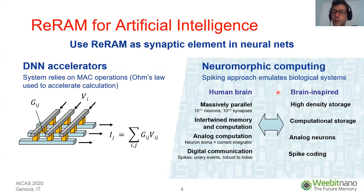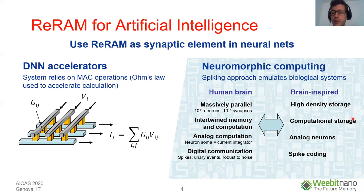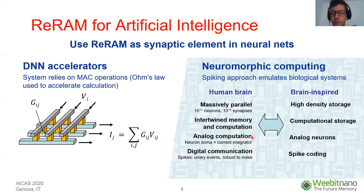Of course, it's not only the spiking approach. Developing an efficient system requires emulating more closely what happens in the human brain, which means we need massive parallel computing with intertwined memory and computation. So there is the need for development of high-density computational storage, which is why emerging memories are very important nowadays. And of course, we need digital communication between neurons — spike coding — and analog computation, which means integration of the spikes by the neurons should be analog. These are more or less the guidelines that should be followed in the implementation of any neuromorphic computing system. Spiking neural networks are typically then associated with intrinsically spiking hardware, such as event-based cameras, for example.